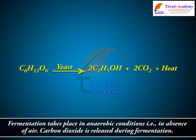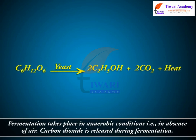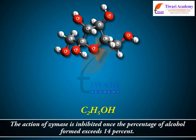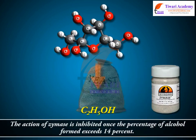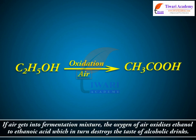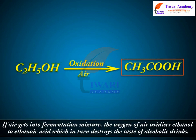Fermentation takes place in anaerobic conditions, i.e., in the absence of air. Carbon dioxide is released during fermentation. The action of zymase is inhibited once the percentage of alcohol formed exceeds 14%. If air gets into the fermentation mixture, the oxygen of air oxidizes ethanol to ethanoic acid, which in turn destroys the taste of alcoholic drinks.